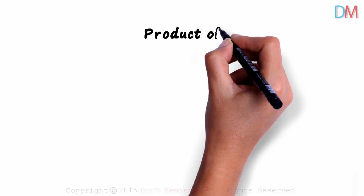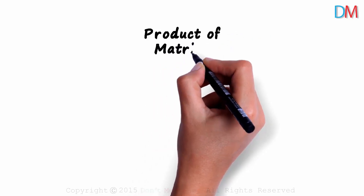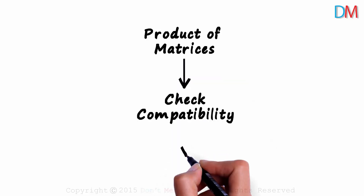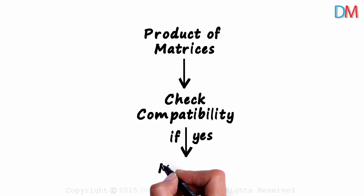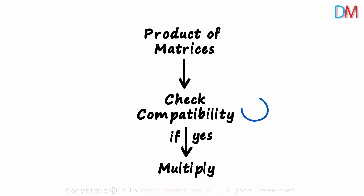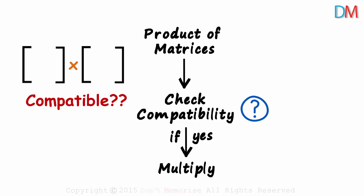How do we find the product of two matrices? Before we find out how two matrices are multiplied, we need to check for their compatibility. Only if they are compatible can they be multiplied. But how do we check for compatibility? How do we know if two matrices can be multiplied? We will come to this, don't worry.